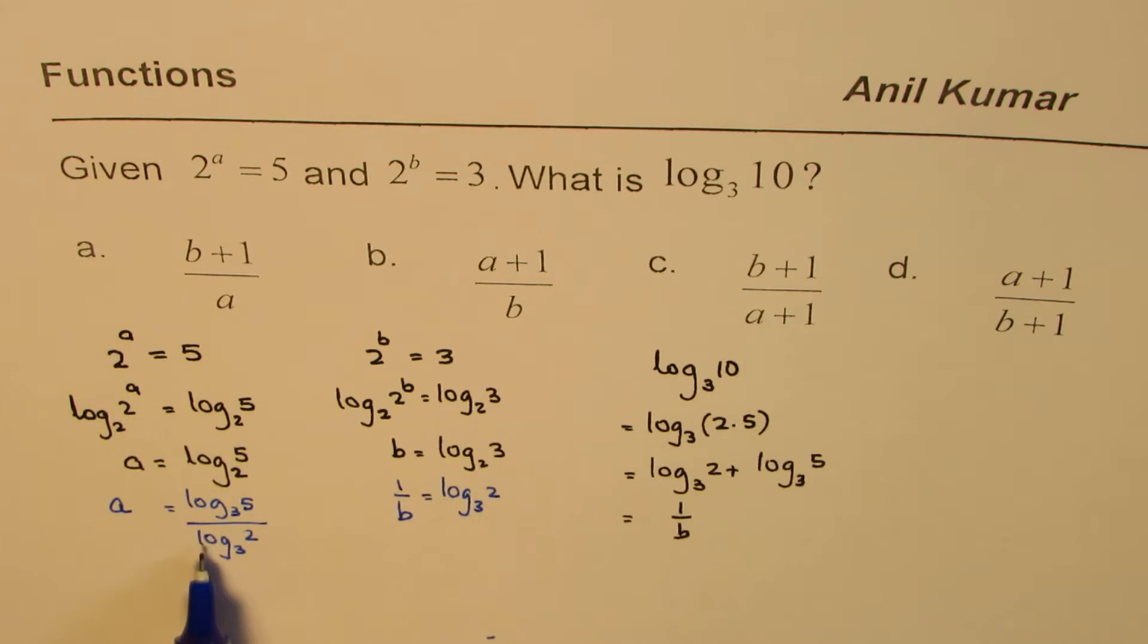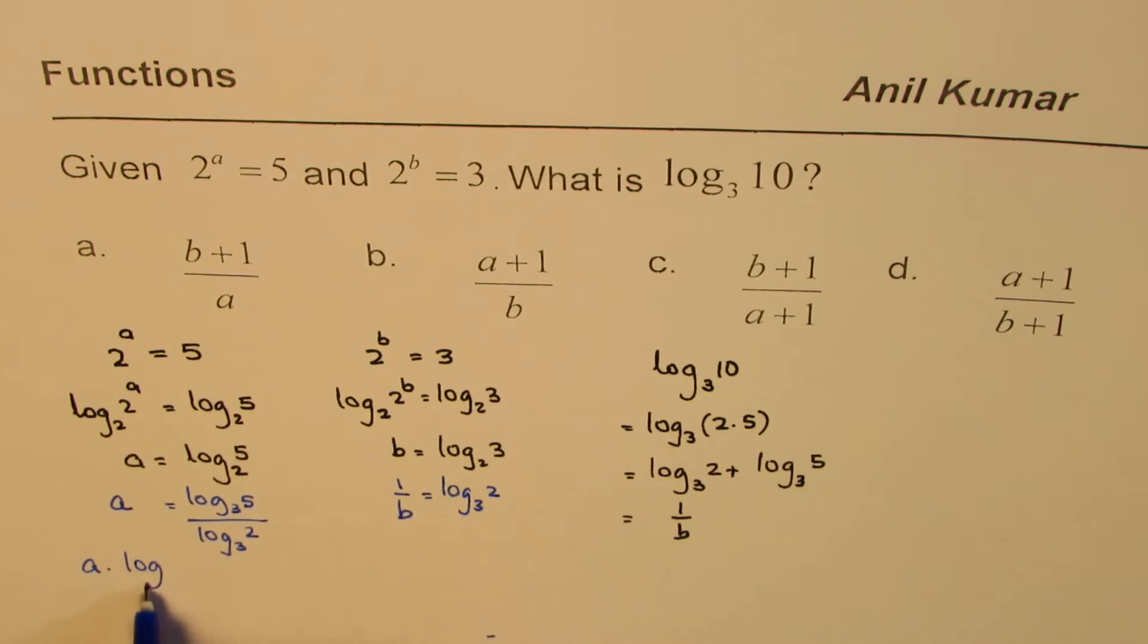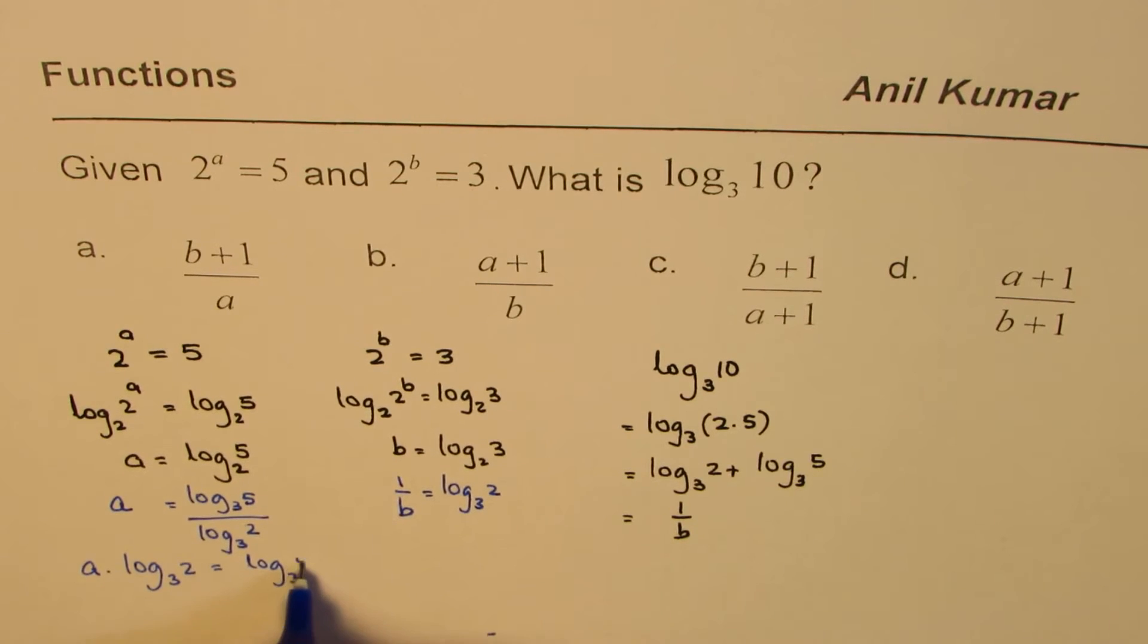Now we know what log to the base 3 of 2 is. So we can cross multiply this. From here, we know a times log to the base 3 of 2 equals log to the base 3 of 5.